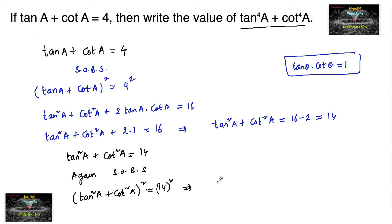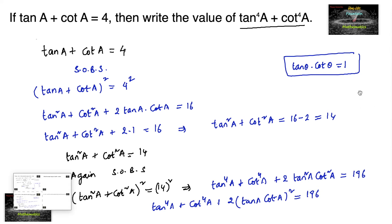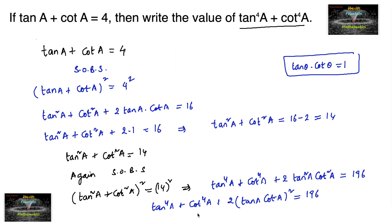This implies tan⁴(a) plus cot⁴(a) plus 2 times tan²(a) into cot²(a) equals 196. Since tan(a) into cot(a) equals 1, we have tan(a) into cot(a) whole squared equals 1, so tan⁴(a) plus cot⁴(a) equals 196 minus 2, which equals 194.